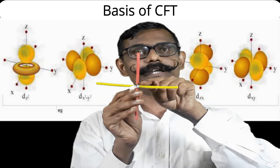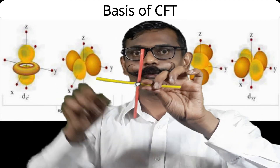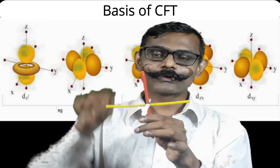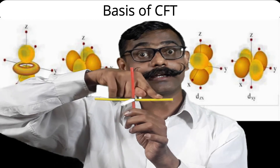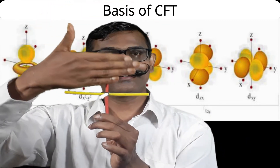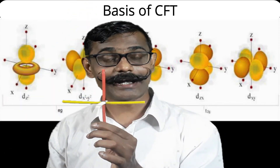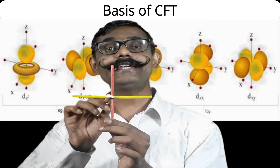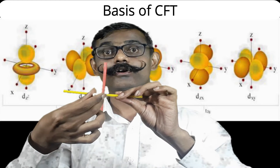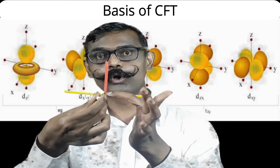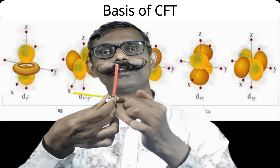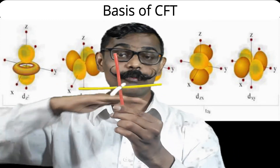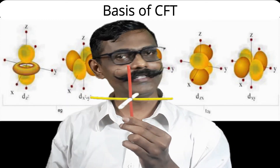The dxz orbital has lobes in between the x and z axes, making 45-degree angles to both, lying in the xz plane — perpendicular to the yz plane. The last orbital, dxy, has lobes in between x and y axes, making 45-degree angles to x and y. All four lobes lie in the xy plane.